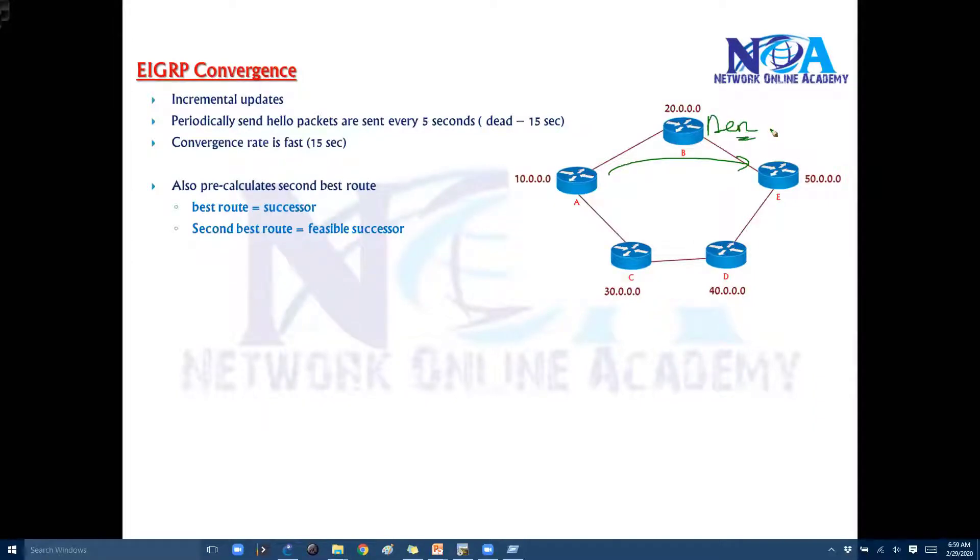And how the router is going to come to know that there is a problem on this route. So there must be some mechanism to identify whether that particular route is working or not. So that is done based on hello packets. So once the neighborship is established even though the updates are incremental. Incremental means whenever there is a change.